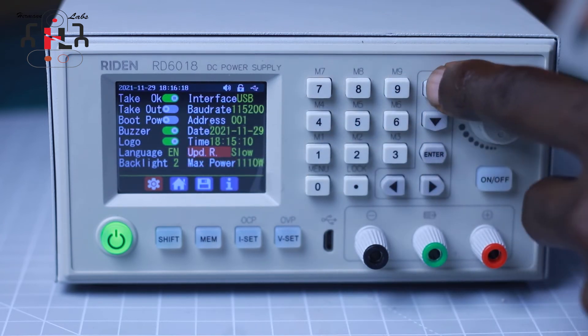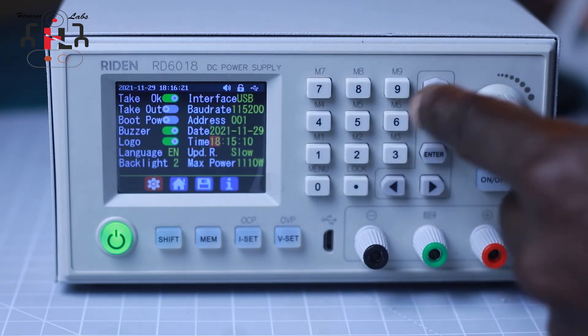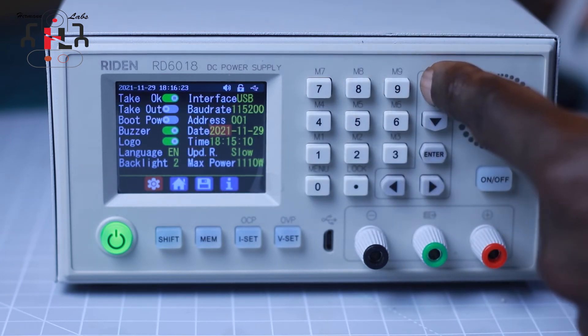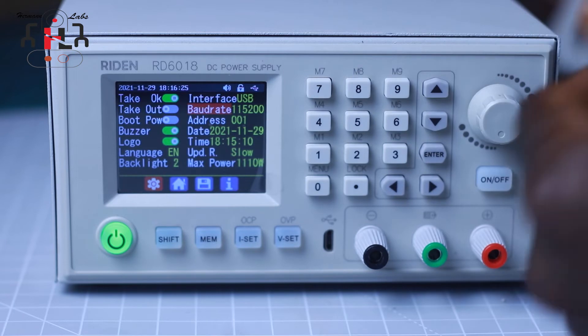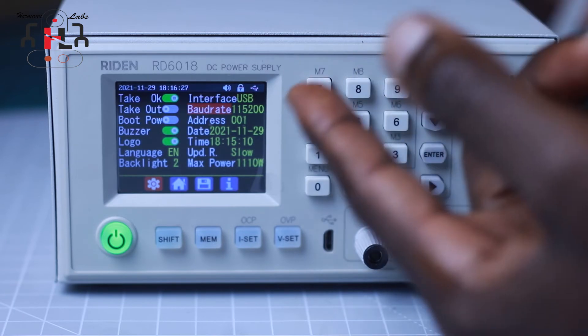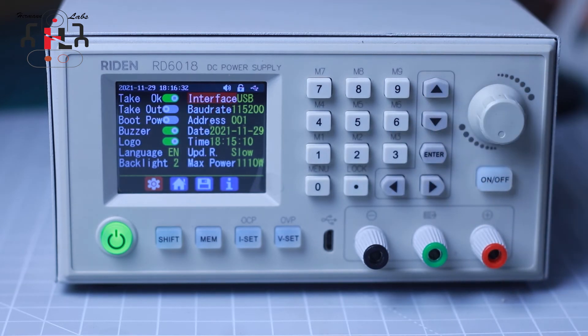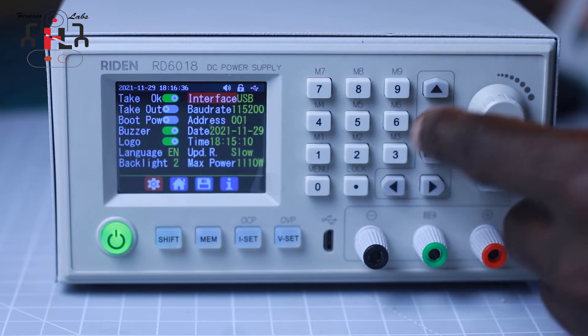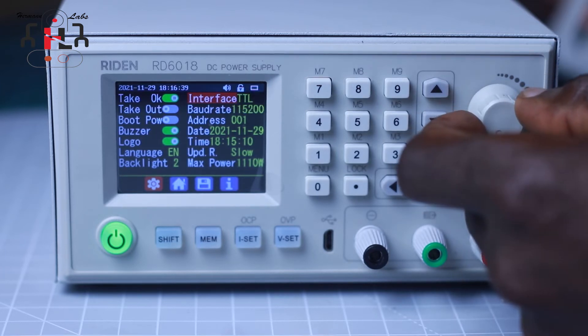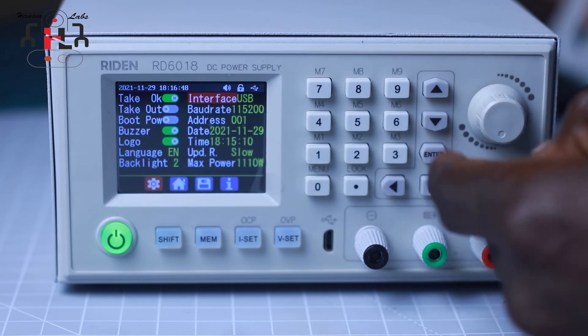So we go to the next line. We have some other parameters which I don't also understand. We can change the time. We can change the date. We can change the baud rate, the frequency of communication between the power supply and the computer. We can also change the mode of communication. In our case, we have USB, which is the default mode. So we're going to stick to that. But we have other options. We have Wi-Fi, we have RS485, we have TTL and we stick to USB.